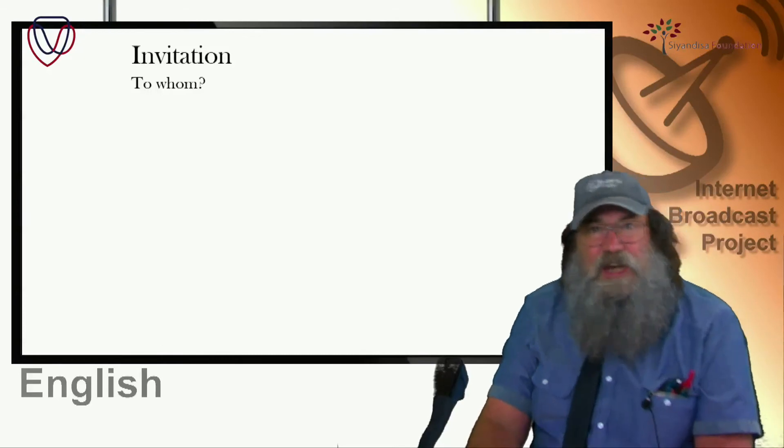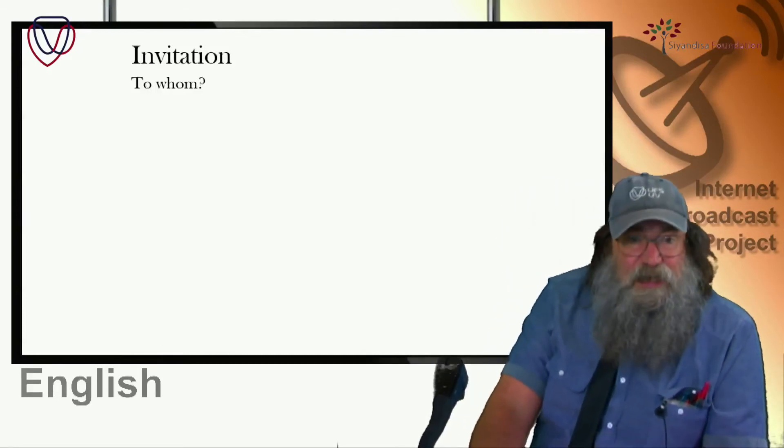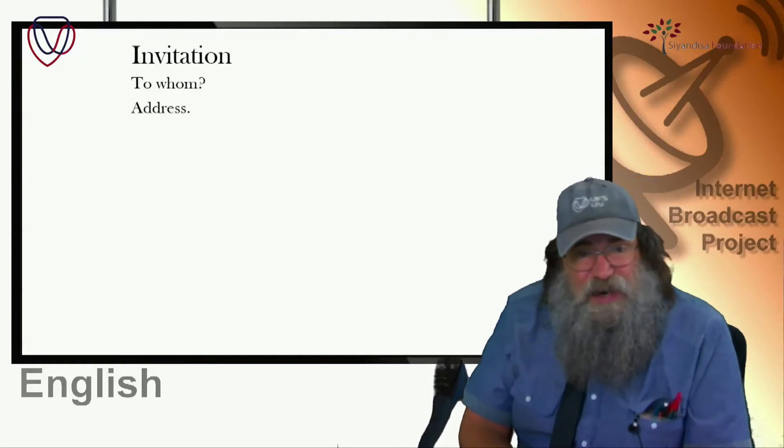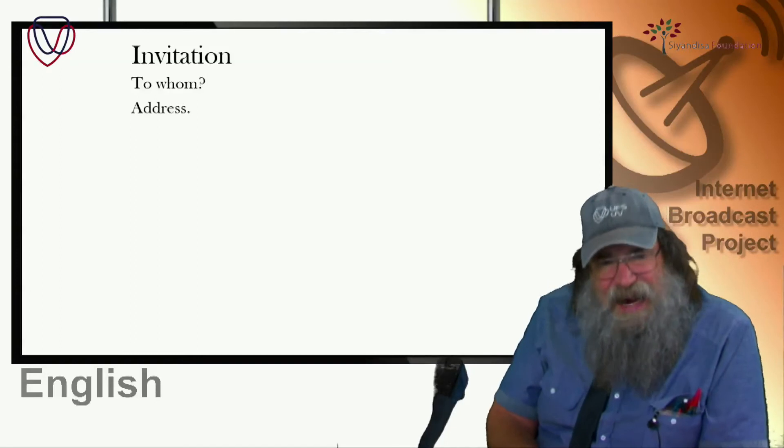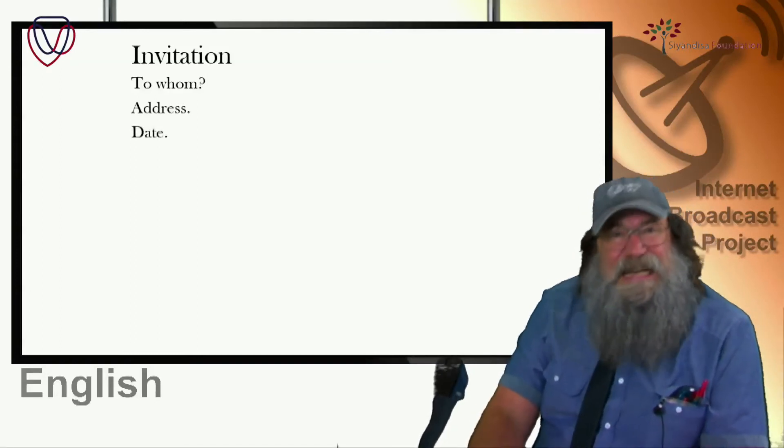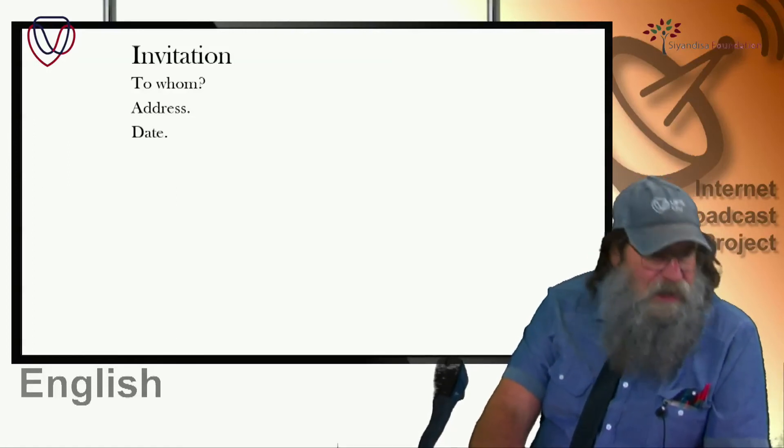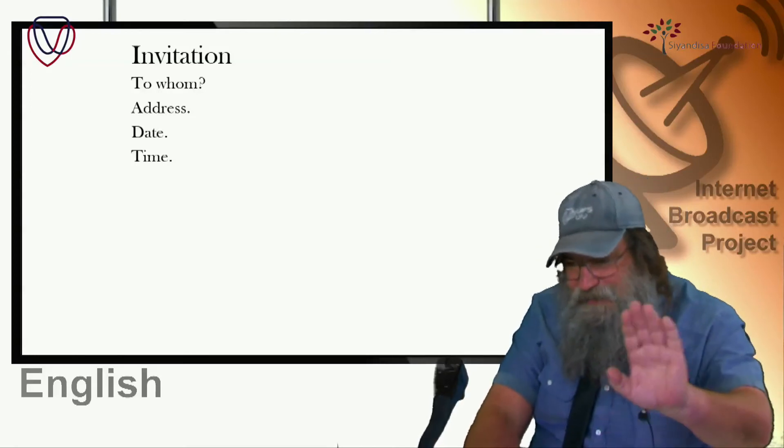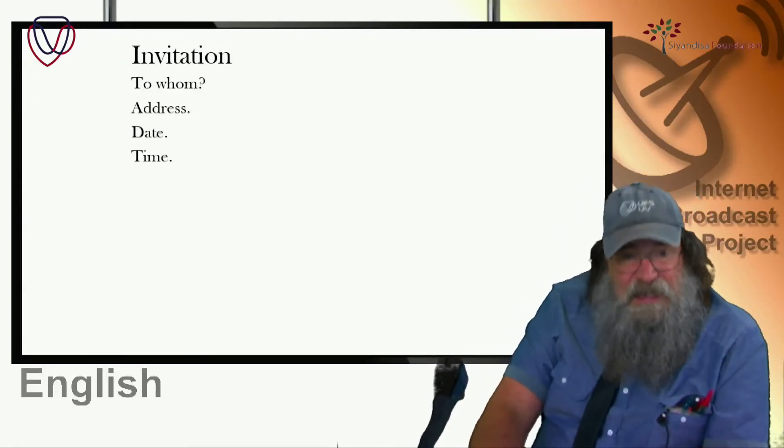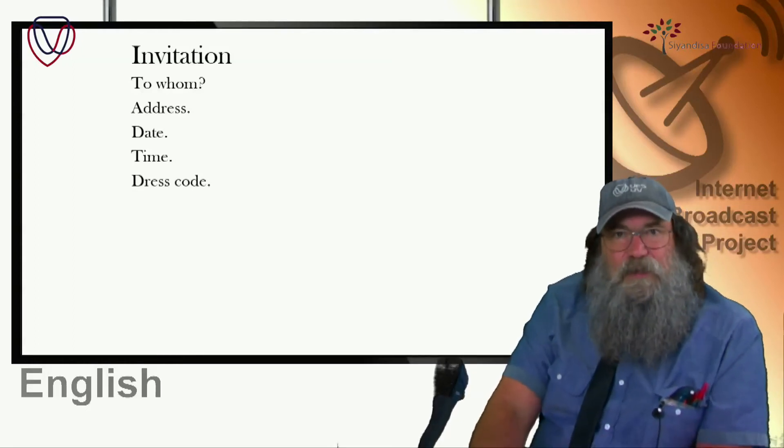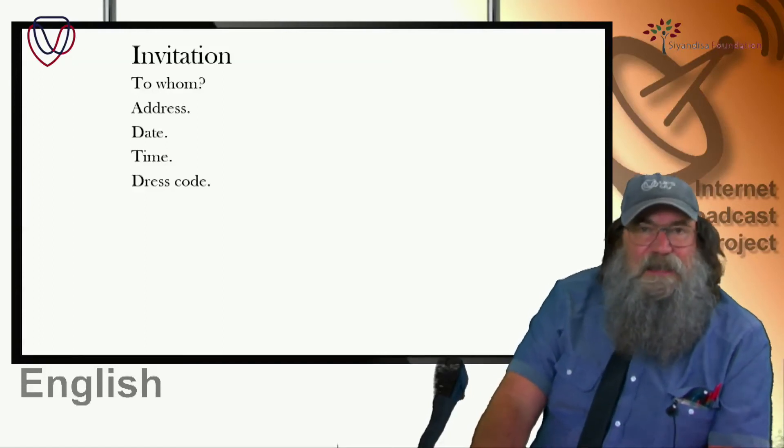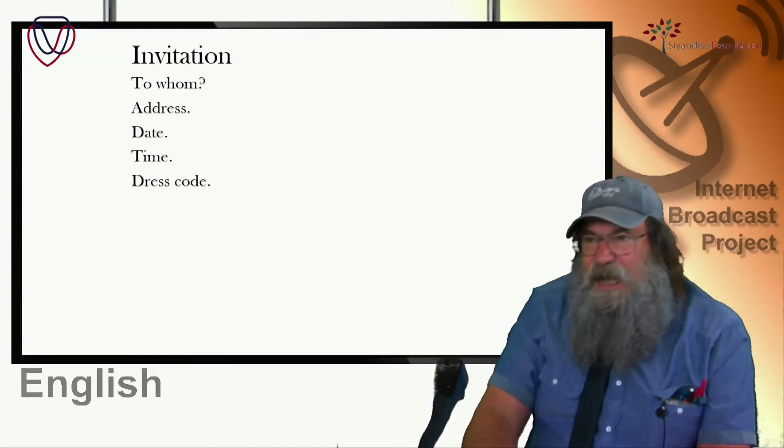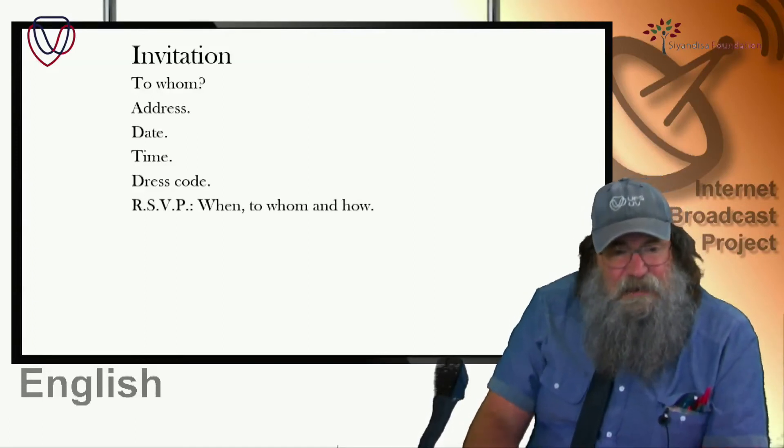Invitation. To whom is the invitation addressed? It must have that detail. The address to which the person is being invited. It must have that detail. The date. If you don't have the date, the person won't know when to come. It must have the time that the event or party or wedding starts. You must have these details. And then, the dress code. The person must know how to dress. Some parties run on themes. And they'll say, everybody should come dressed in black and white. Or come dressed as a celebrity or something like that.